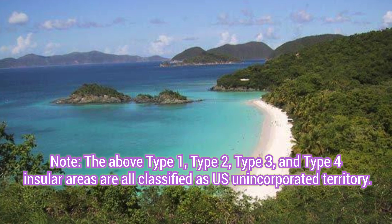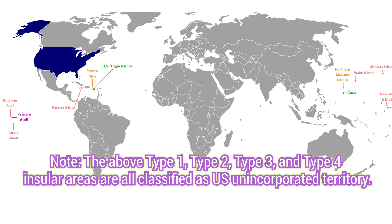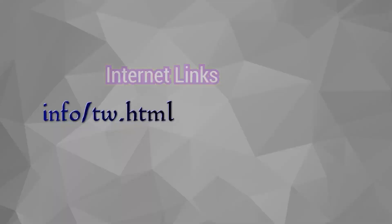Note: the above Type 1, Type 2, Type 3, and Type 4 Insular Areas are all classified as U.S. Unincorporated Territory. U.S. Presidential Proclamation...